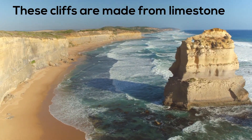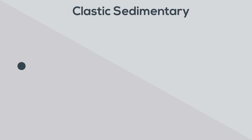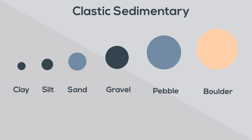Clastic sedimentary rocks are subdivided according to the dominant particle size. These particle sizes are ranked from smallest to largest: clay is the smallest, then silt, sand, gravel, pebble, and boulder.